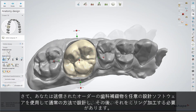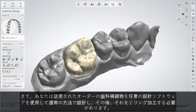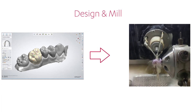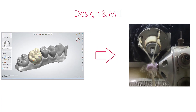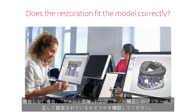Now you need to design the restoration for the sent case in the usual manner, using your design software of choice, and after that, mill it. Check if the restoration fits the model. If not, you should check whether the drill compensation and cement space parameters are set correctly.